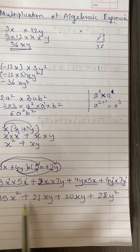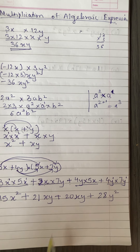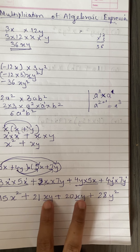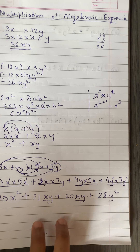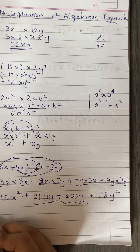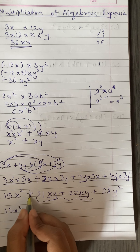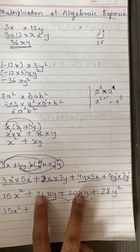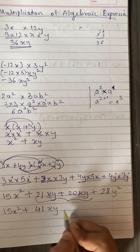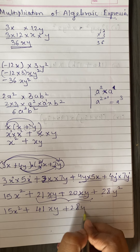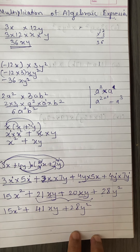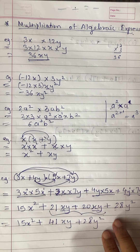Now check whether same variables can be combined. The terms 21xy and 20xy have the same variable, so we can add the coefficients: 21 + 20 = 41. Write 15x² as it is, plus 41xy, plus 28y². This is the final answer. It is a little bit difficult, but if you keep solving and practicing, you will enjoy this kind of sum.